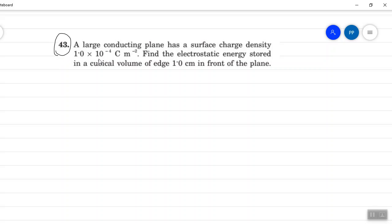Question is: a large conducting plane has a surface charge density of 1 into 10 to the power minus 4 Coulomb per meter square. Find electrostatic energy stored in a cubical volume of edge 1 cm in front of the plane.